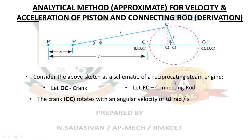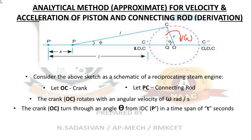The crank OC rotates with an angular velocity of omega — either clockwise or anticlockwise. The crank OC turns through an angle theta from the IDC in a time span of t seconds. The IDC, or inner dead center, is the extreme left position of the piston. Initially the piston is at IDC, where the connecting rod and crank are aligned in a straight horizontal line.